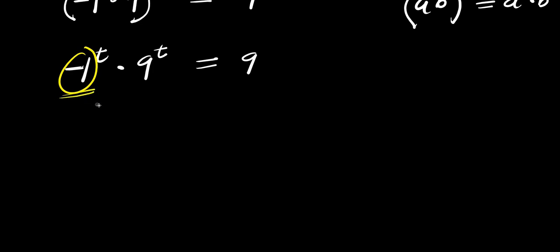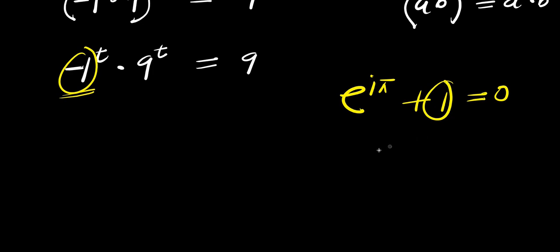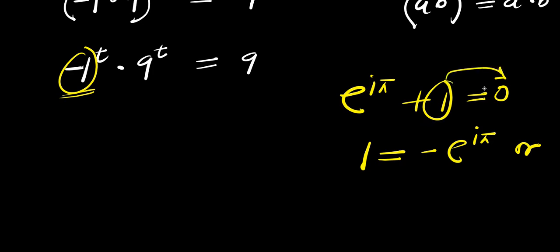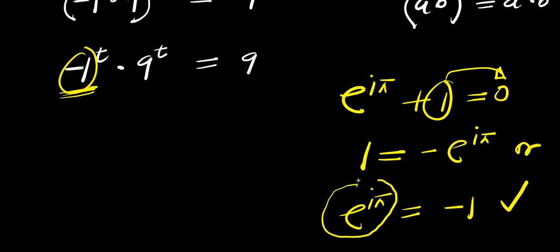From here we have negative 1, so we are going to replace this with something. Let's consider Euler's identity: e to the power of i times pi plus 1 equals 0. Making 1 the subject gives 1 equals negative e to the power of i times pi, or equivalently, e to the power of i times pi equals negative 1. We are going to use this because negative 1 is the same as e to the power of i times pi.